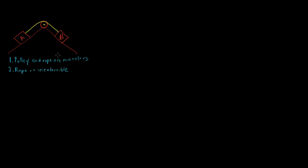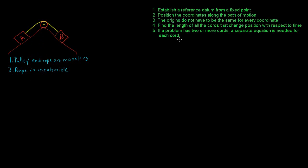When we're trying to solve the problem, the first thing we have to do is figure out a way to relate the motion of block A to the motion of block B. We have a couple of rules and procedures to follow. The first is we have to establish a reference datum from a fixed point. The second rule is to position the coordinates along the path of motion. The third rule is the origins do not have to be the same for every coordinate.